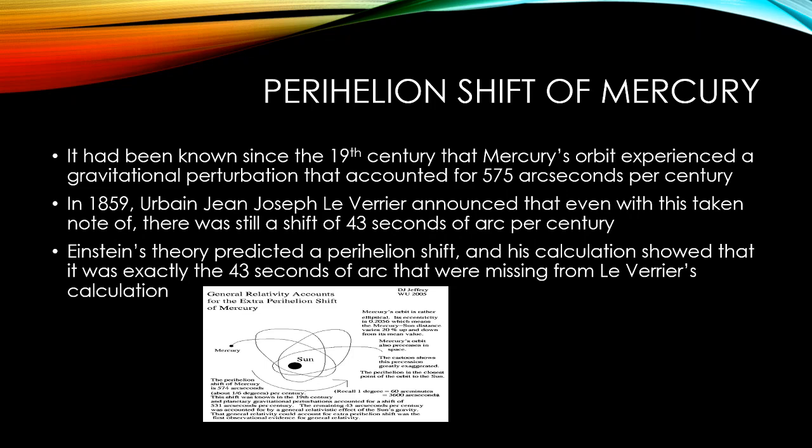The perihelion shift of Mercury had been known about since the 19th century, due to a gravitational perturbation that accounted for 575 arc seconds per century. In 1859, Le Verrier announced that even with this taken into account, there was still a shift of 43 seconds of arc per century. Einstein's theory predicted a perihelion shift, and his calculation showed it was exactly the 43 seconds of arc missing from Le Verrier's calculation.